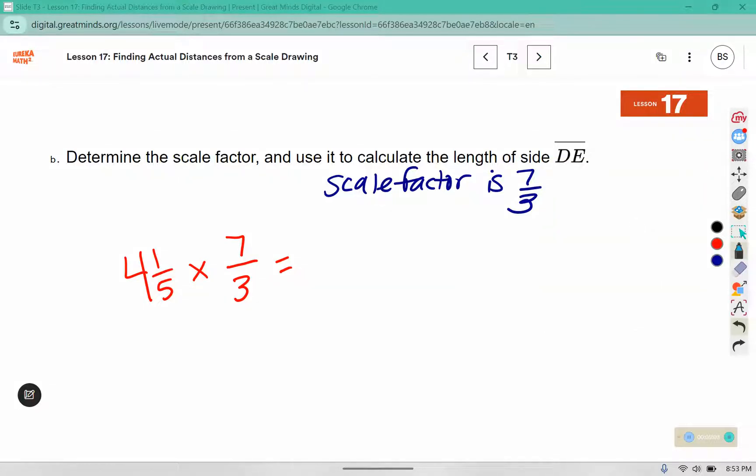I'm going to change the improper fraction. 4 times 5 is 20 plus 1 more is 21 fifths. I know 21 is 7 threes and 3 is 1 three. 7 times 7 is 49 and 5 times 1 is 5.